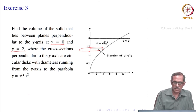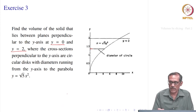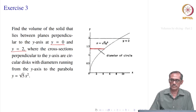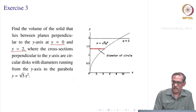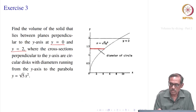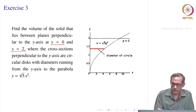Those disks have diameters running from the y-axis to the parabola. It says the circular disk diameter runs from the y-axis to the parabola. The diameter runs from the y-axis to the parabola x = √5·y². Volume is positive everywhere, so we take the diameter this way and plot the picture in the first quadrant. Once this is the diameter, you have a circular disk, and the solid looks like a cone type — it is not a cone, but looks like that — with a circle everywhere.